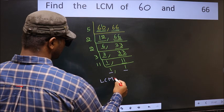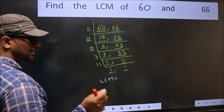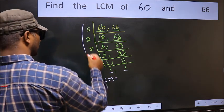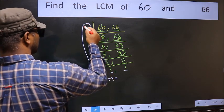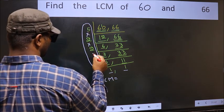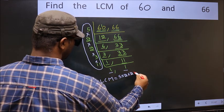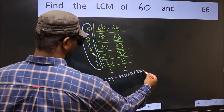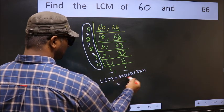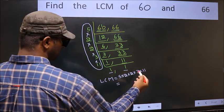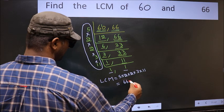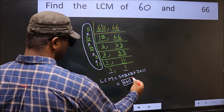So our LCM is, LCM is the product of these numbers. That is 5 into 2, into 2, into 3, into 11. When we multiply these numbers, we get 660. So this is our LCM.